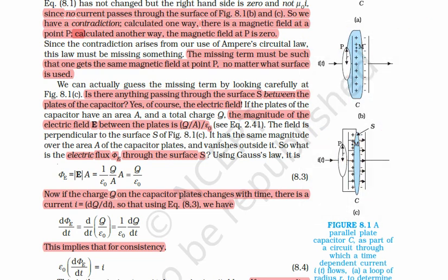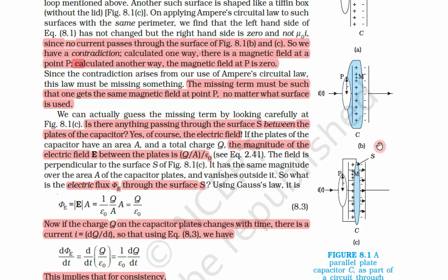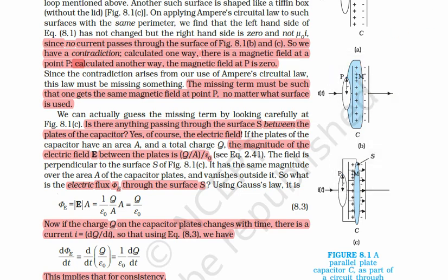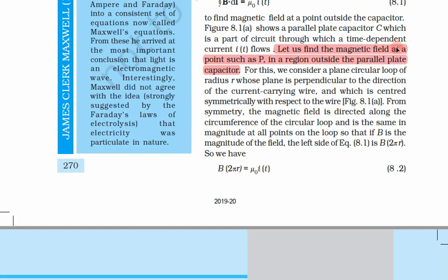We are solving for the same point P but getting different results from different Amperian loops — which should not happen. During his experiments, Maxwell found that there is some magnetic field inside the capacitor too, meaning some current must be associated with it. This current is called the displacement current id. In the first case, the result B × 2πr = μ₀iₜ is perfectly valid since the surface touches the current.